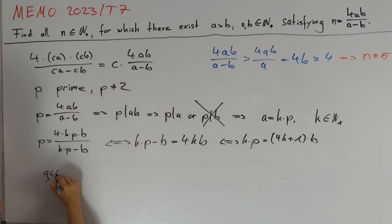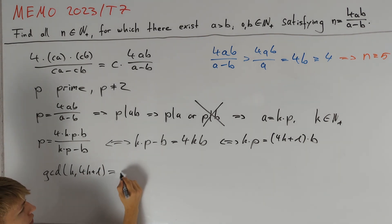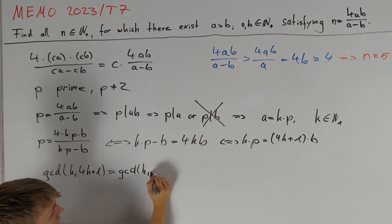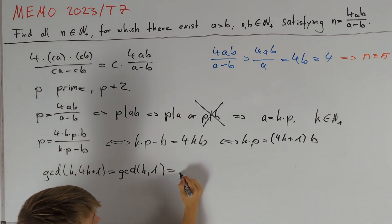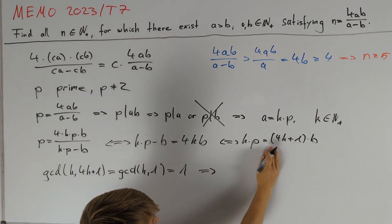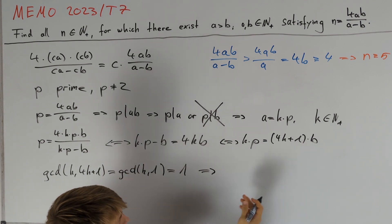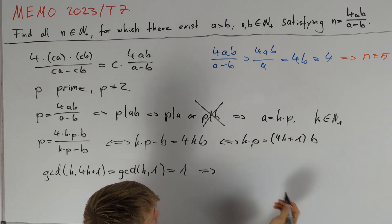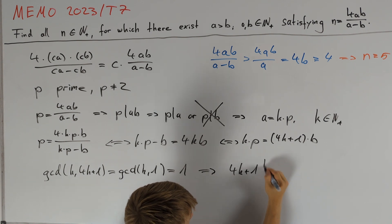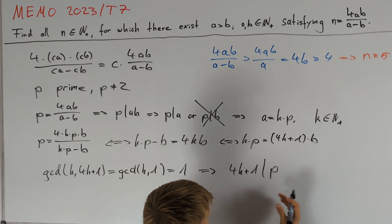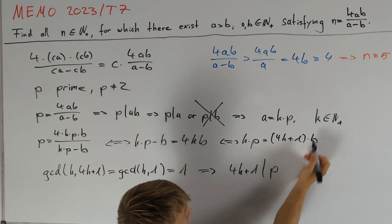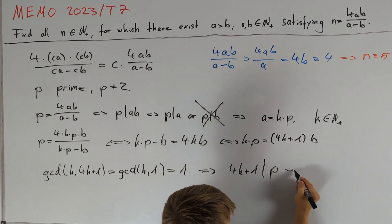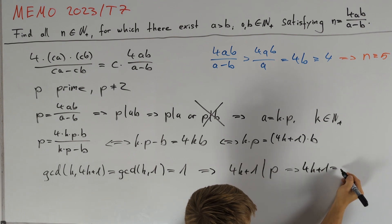Looking at the greatest common divisor of k and 4k plus 1, we can subtract 4 times k from the second term to get gcd(k, 1) which equals 1. Therefore, since 4k plus 1 divides k times p and 4k plus 1 and k are coprime, we get that 4k plus 1 must divide p. Since p is prime, and k is a positive integer making 4k plus 1 greater than 1, we conclude that 4k plus 1 equals p.